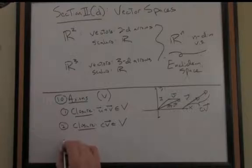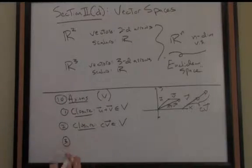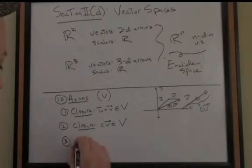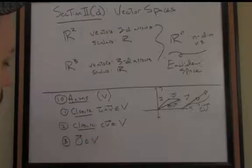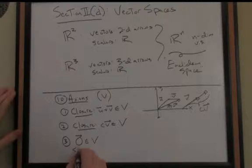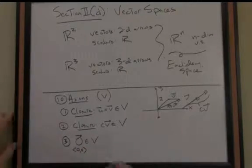To have a nice algebraic structure, we need something like a zero in our vector space. So there needs to be a zero vector in V. So in R2, for instance, that would, of course, just be the vector (0, 0).